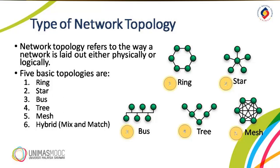The second one is the star topology. In a star topology, each device has a dedicated point-to-point link only to a central controller, usually called a hub. The devices are not directly linked to one another. If one device wants to send data to another, it will send the data to the controller, which then relays the data to the other connected devices, as you can see in our figure.